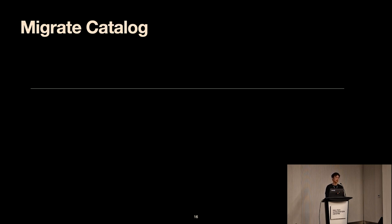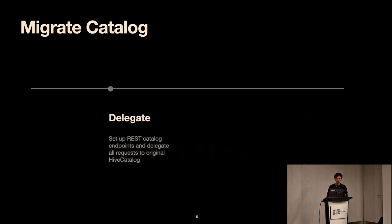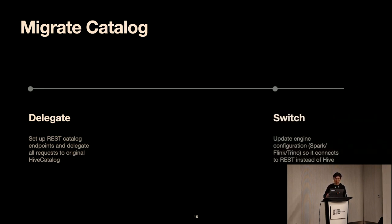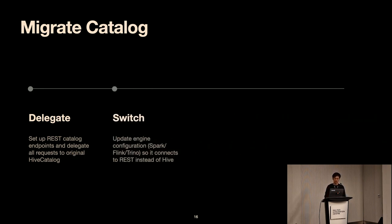For the customer-facing catalog migration from Hive to REST: first, set up the new REST endpoint and delegate all requests to the Hive catalog so all metadata stays the same with no changes needed on the user front. Second, update the catalog configuration in the engines — Spark, Trino, or Flink configurations need to be updated to connect to the REST endpoint instead of the Hive Metastore, which may also require upgrading Iceberg dependencies. Luckily, the latest releases of all common engines now have proper support for the Iceberg REST catalog.